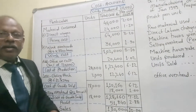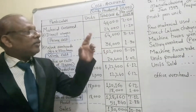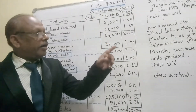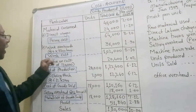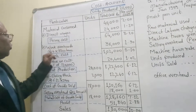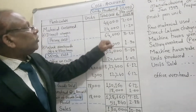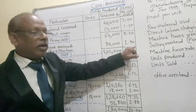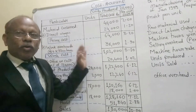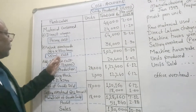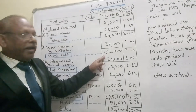Next we add work overheads, which means factory overheads. The machine hour rate is 4 rupees and hours worked are 9,500, so we multiply 4 rupees by 9,500 to get factory overheads of 38,000 rupees. Dividing 38,000 by 20,000 gives 1 rupee 90 paise per unit. Adding factory overheads to prime cost gives work cost — also called factory cost.